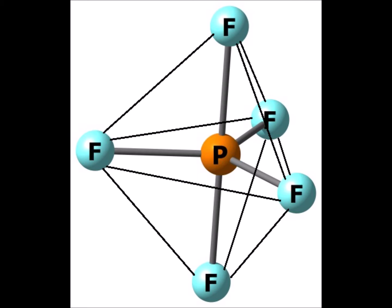Notice that along the waist we have three equatorial fluorine atoms that form a triangle. Then we have a linear path from the top fluorine to the central phosphorus to the bottom fluorine — this is the axial direction. Along the axial direction we have 180-degree angles, and along the equatorial plane we have 120-degree angles.